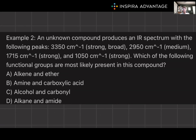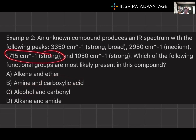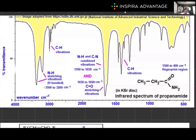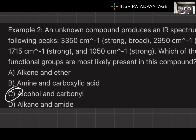For example 2, an unknown compound produces an IR spectrum with the following peaks: one at 3,550 that is strong and broad; one at 2,950 that is medium; a strong one at 1,715; and a strong one at 1,050. What functional groups are most likely present? The key is the 3,550 strong and broad peak — this immediately suggests a carboxylic acid or an alcohol. Then the strong peak at 1,715 is the carbonyl stretch. We know it's not an amine because we don't see the characteristic N-H pattern. So the compound most likely contains an alcohol and a carbonyl group.